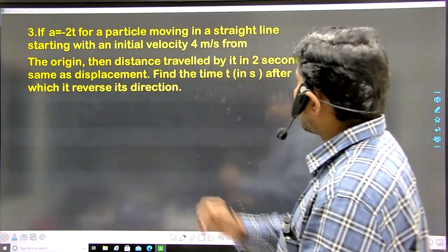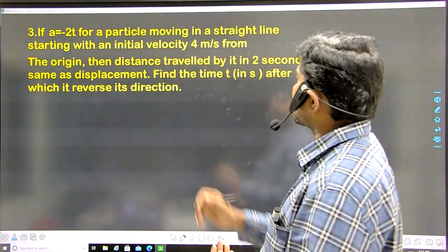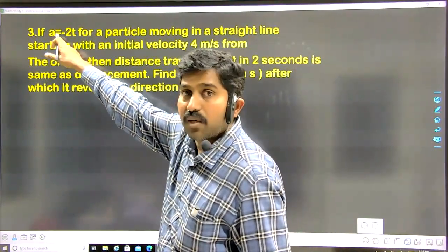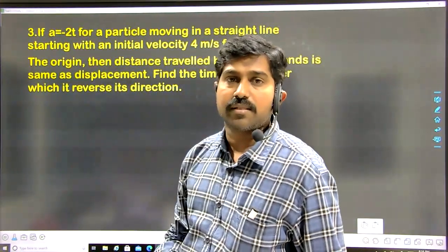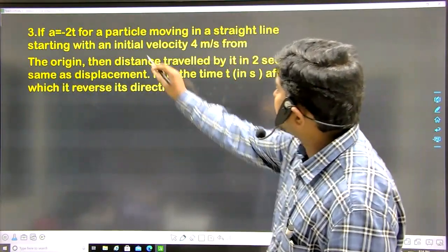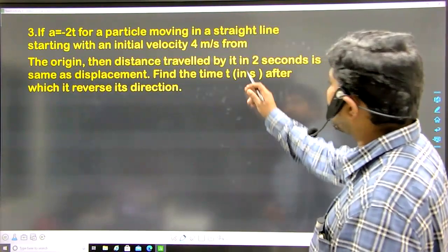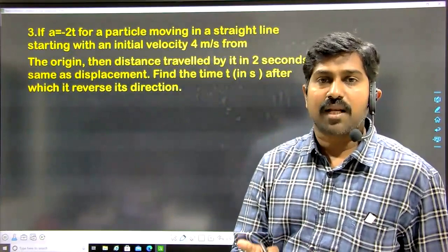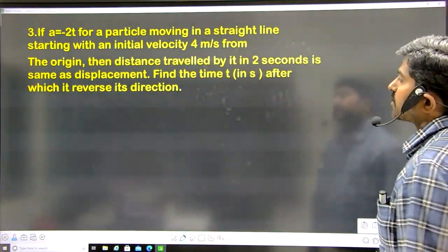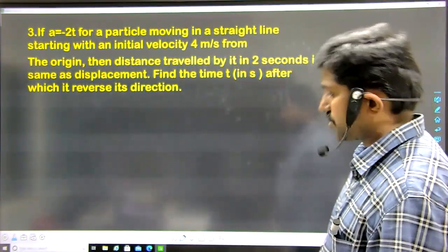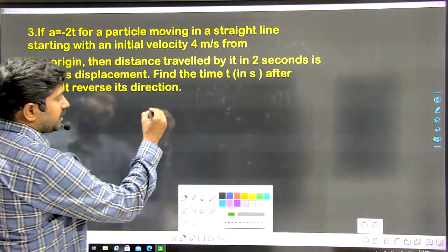Question three: if acceleration a equals minus 2t for a particle moving in a straight line, starting with initial velocity 4 meter per second from the origin, find the time after which it reverses its direction. Notice acceleration is not constant — it is variable, meaning this is non-uniform motion. Initial velocity is 4 meter per second from the origin. Since the particle travels along a straight path without turning back initially, distance and displacement are the same.